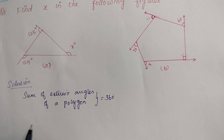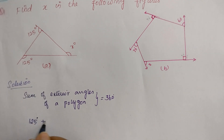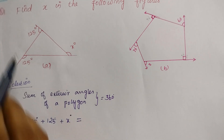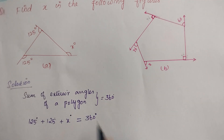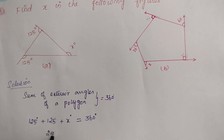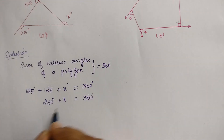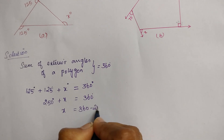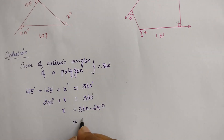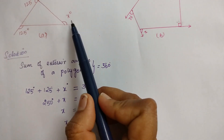The first angle is 125 degrees and the second angle is 125 degrees, plus angle x. The sum of these three angles is 360 degrees. So 125 plus 125 is 250, and 250 plus x equals 360 degrees. Therefore x equals 360 minus 250, which is 110 degrees. So the angle x here is 110.